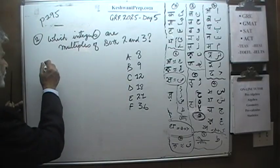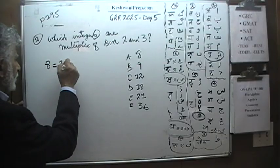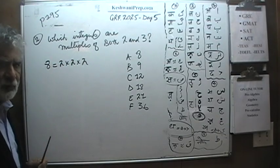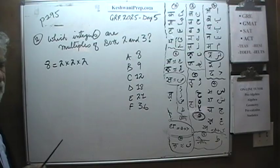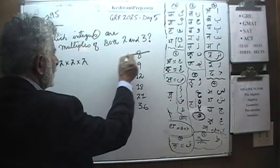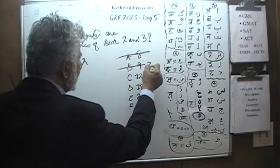First we have 8. 8 as you can see is just made up of 2 times 2 times 2. We are just breaking it up into prime factors. It is not a product of 2 and 3, it is just a product of 2. Similarly, 9 would just be 3 times 3.